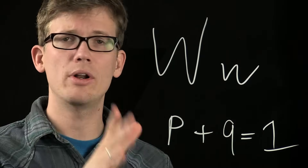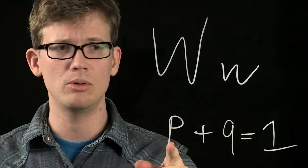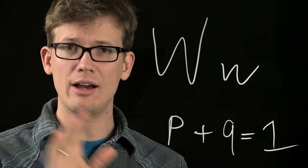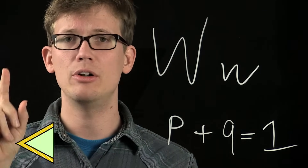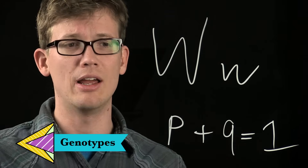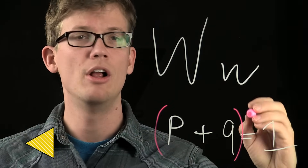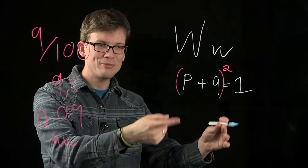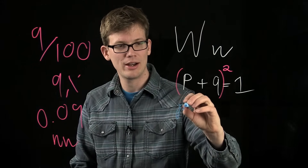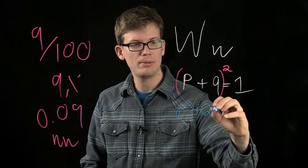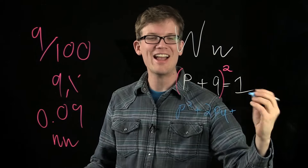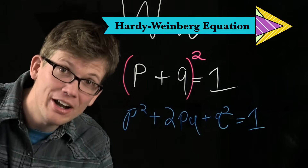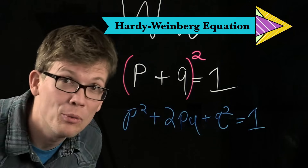What I know is that the frequency of big W plus the frequency of little w equals 1. But that's in the entire population, and each individual has two different alleles — so this is happening twice in every individual. What we need to do is square it. When we square that equation, if you remember algebra, you get p squared plus 2pq plus q squared equals 1. And that is what Hardy and Weinberg did — that is the Hardy-Weinberg equation.